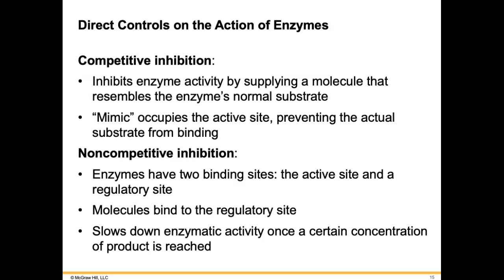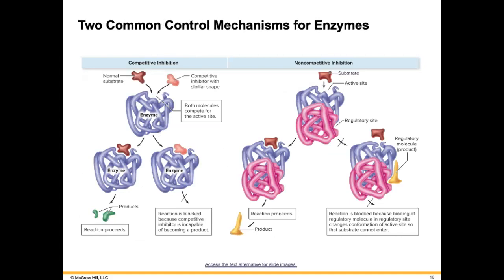So competitive and non-competitive inhibition — there's a picture here showing all of this. You can see the regulatory molecule comes along and binds, causing this binding site to close up. This is when nothing is inhibiting, and this is when that regulatory molecule attaches, changes the shape of the enzyme a little bit, and keeps the substrate from binding. In competitive inhibition, the substrate that's supposed to attach and the imposter look similar — the imposter binds and the actual substrate cannot bind to the enzyme.